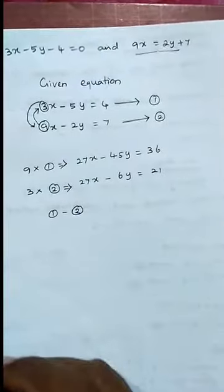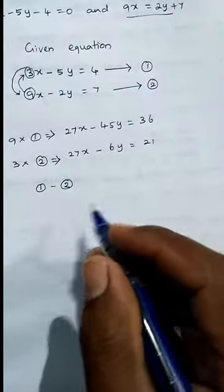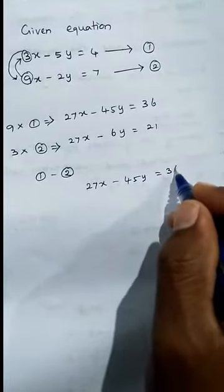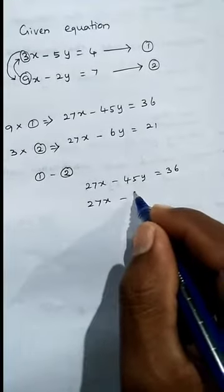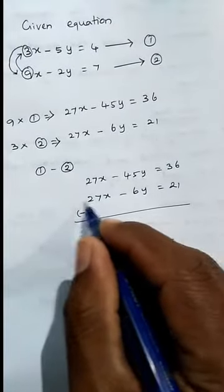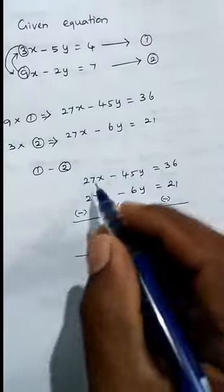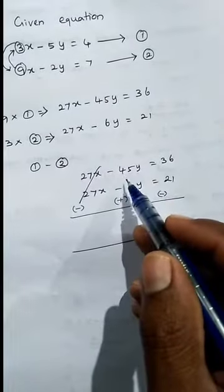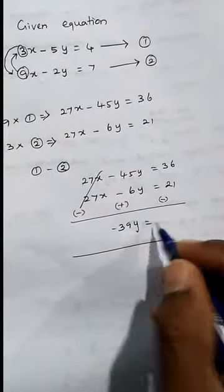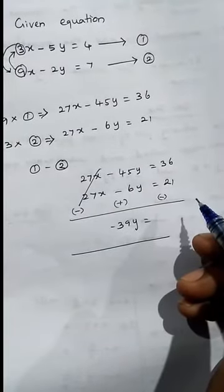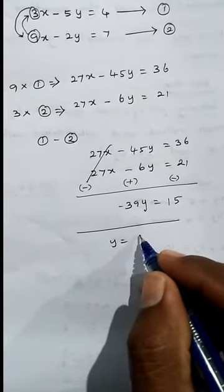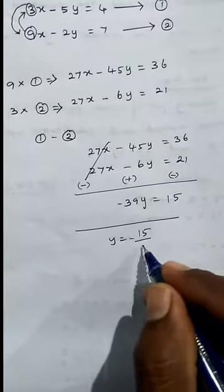Subtract equation 1 minus equation 2 — you can also do 2 minus 1, that's fine. So 27x minus 45y equals 36. To subtract, take the opposite symbol for the bottom terms. The x terms cancel. Then minus 45y plus 6y gives minus 39y. And 36 minus 21 gives 15. So minus 39y equals 15, giving y equals 15 divided by minus 39, which simplifies to minus 5/13.